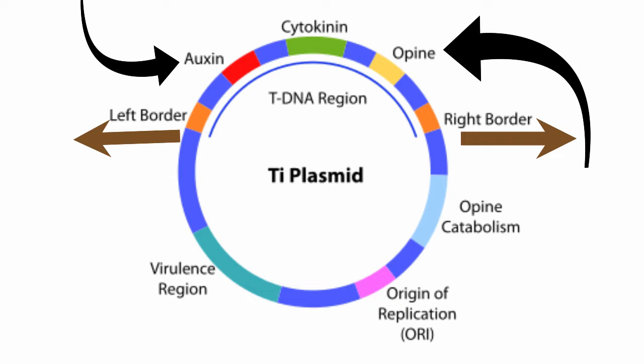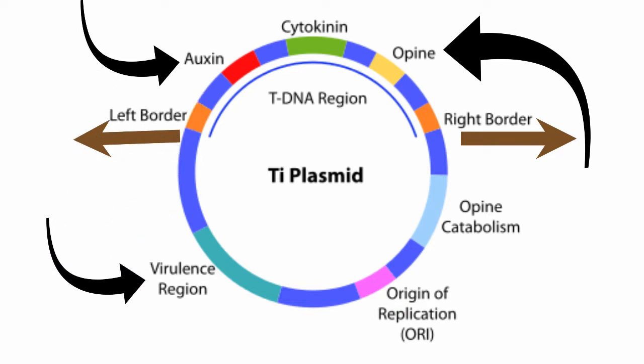Cytokinin and auxin, within the left border, are combined and called onco genes, which cause tumors in plants. The Ti plasmid is a 200 kb plasmid. The Ti plasmid also has a virulence region, which will be discussed in the mechanism of T-DNA transfer in plant cells.